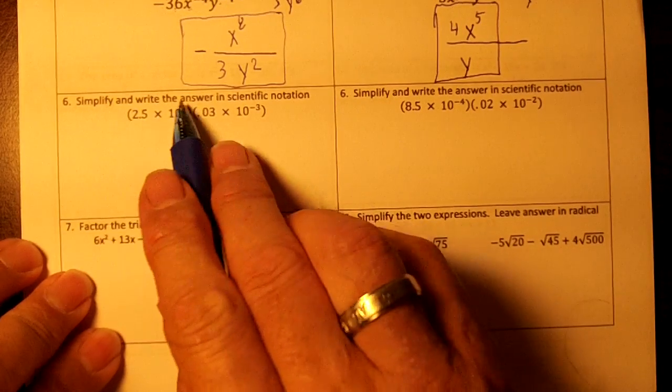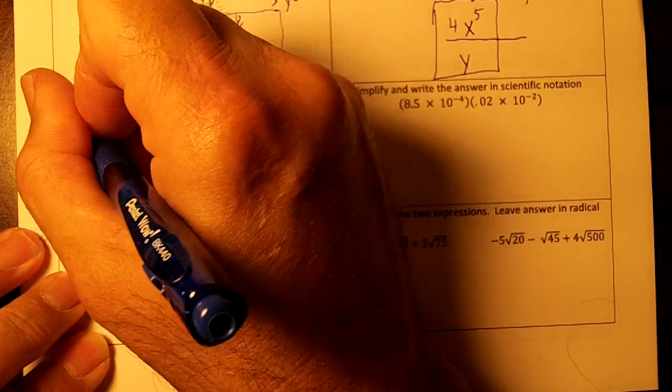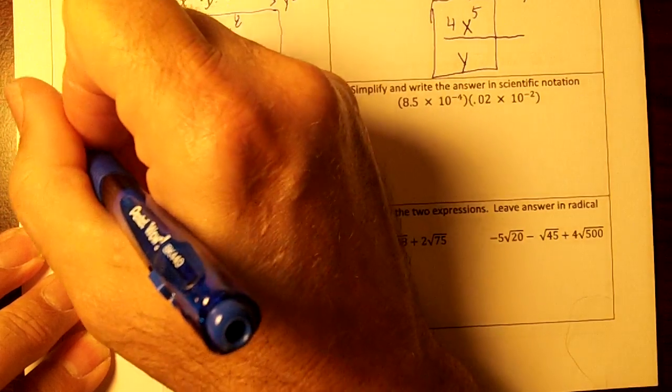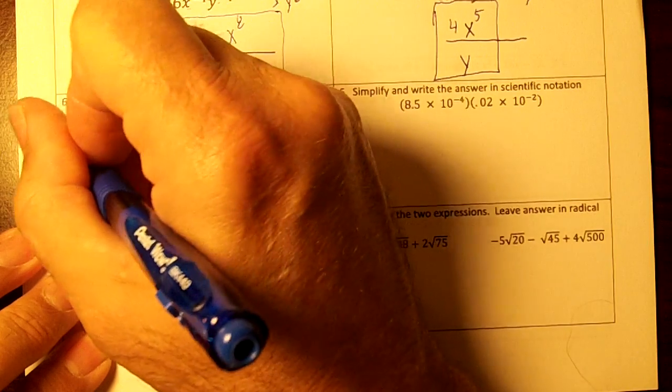Okay, we're going to do 2.5 times 0.03. So let's go back to sixth grade and remember our rules for multiplying decimals.